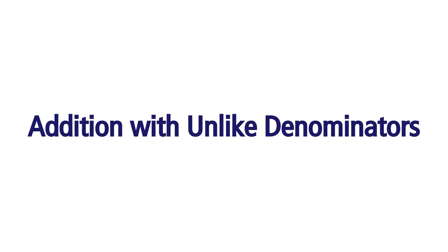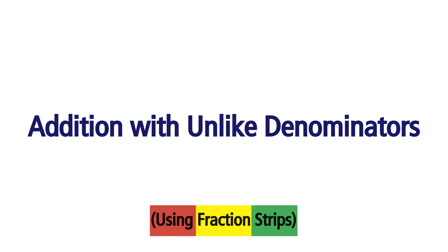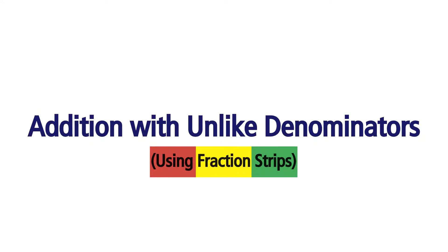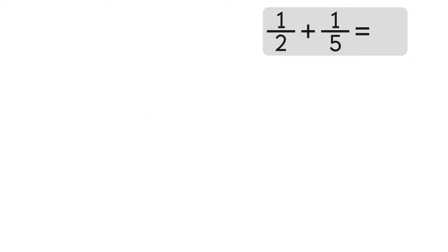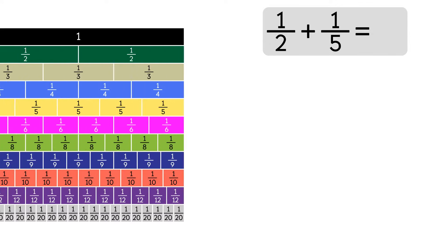Addition with unlike denominators using fraction strips. Let's say we want to add 1 half plus 1 fifth. We can't add two fractions with unlike denominators. We can add these fractions by converting the denominators into like denominators. We'll do this by using fraction strips.